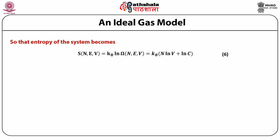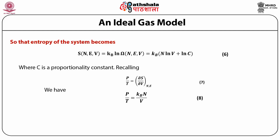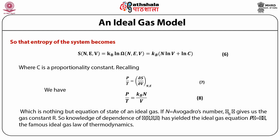Entropy of the system becomes S(N, E, V) = k_B log(omega) = k_B [N log V + log C]. Recalling that P/T = (∂S/∂V) at constant N and E, we have P/T = k_B N / V, which is the equation of state of an ideal gas. If N is Avogadro's number, k_B · N gives the gas constant R. Thus, knowledge of the dependence of omega has yielded the ideal gas equation PV = RT — the famous ideal gas law of thermodynamics.